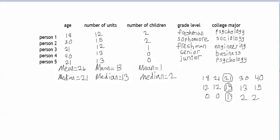Sorry, I made a mistake. The median of this column of data was 1. That's why I said the mean and the median came out to the same number, and it's fine that the mean and the median came out to the same number because that can happen sometimes.